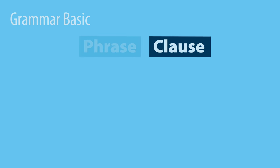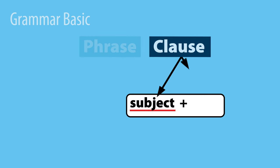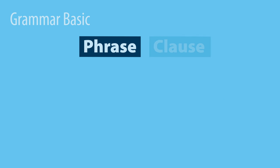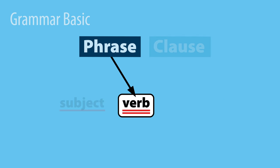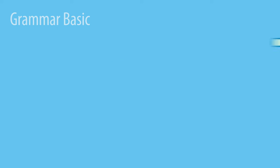A clause has both a subject and a verb, and maybe more than one of each. A phrase doesn't. It may have a verb, but it doesn't have a subject-verb combination.